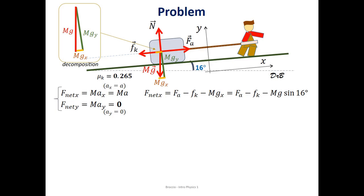F net y is the normal force minus mg sub y, which is the y component of mg. Again, y does not mean vertical, y means perpendicular to the direction of motion in this problem. So, that would be normal force minus mg cosine 16, because mg sub y is now the adjacent side to the angle of 16 degrees in that triangle.